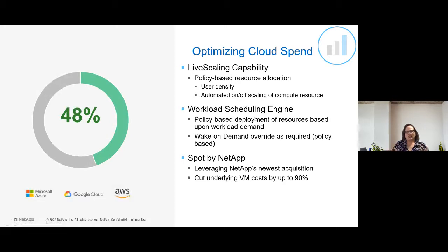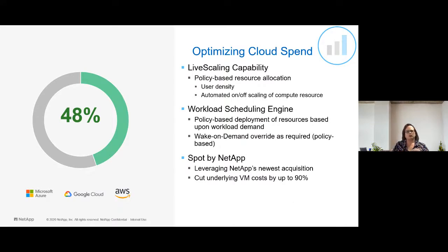VDS also optimizes cloud spend. We all know that cloud can be expensive and variable in pricing, but VDS incorporates specific things to make sure you're not paying for resources you don't need. The first aspect is called live scaling — a policy-driven, policy-based resource allocation that allows you to set up exactly what resources are needed for each individual group or set of users. Live scaling will evaluate all the various cloud virtual desktops in your environment, and if they are determined to not be active, it will shut those down so you're not paying for cloud spend that is not actively being used.